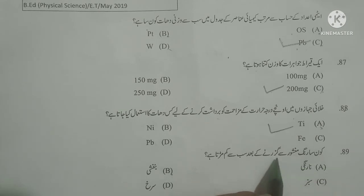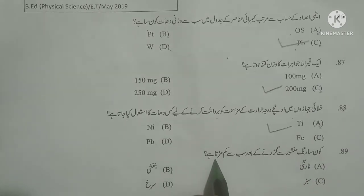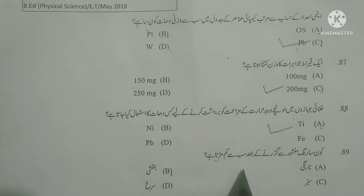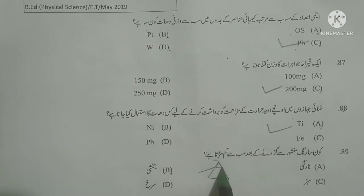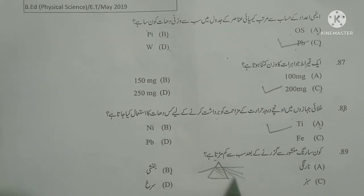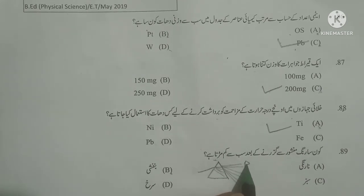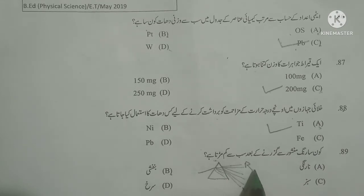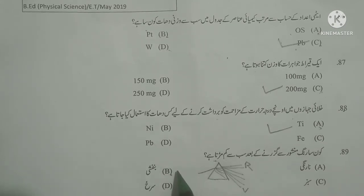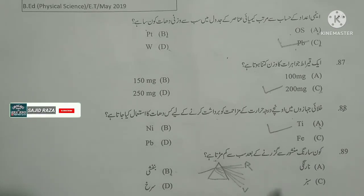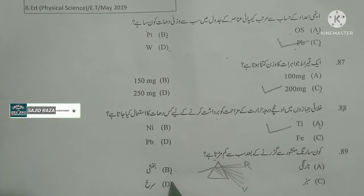Next question: Kaun sa rang mansoor se gujarne ke baad sabse kam murta hai? Which of the following colors of light is bent least when passing through a prism? As you know, when light passes through a prism it is split into 7 colors. Violet color is bent most and red color is bent least. Options given: narangi means orange, banapshi means violet, subz means green, surgh means red — red is correct.